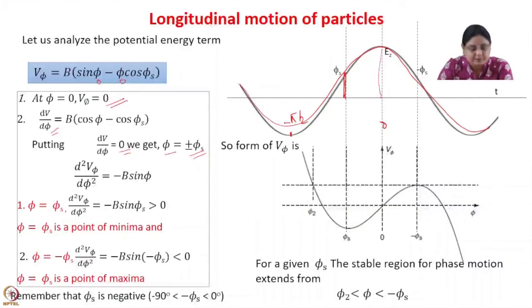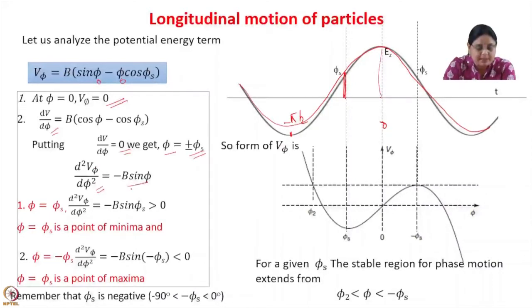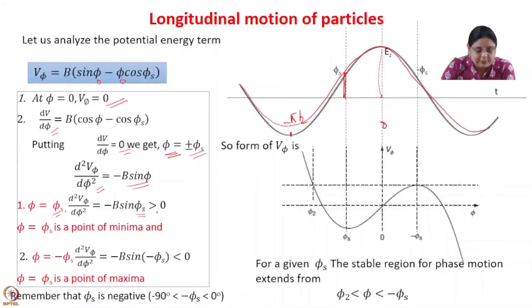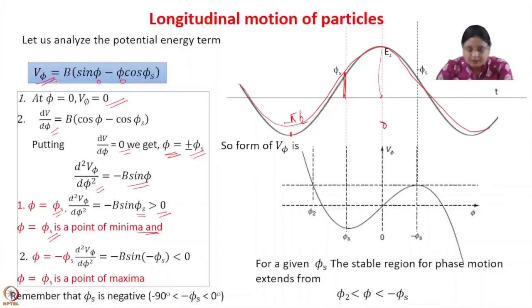Let us calculate which is a maxima and which is a minima. Differentiating V(phi) again, we have d²V(phi)/d(phi)² equal to minus b sin phi. Taking the first value phi equal to phi_s, we get d²V/d(phi)² equal to minus b sin phi_s. Since phi_s is a negative value lying between minus pi by 2 and 0, this quantity will be greater than 0. So phi equal to phi_s is a point of minima for the potential.